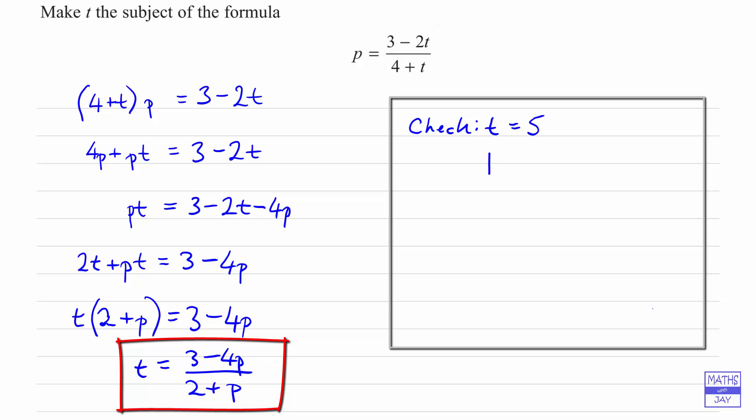So when t is equal to 5, then the original formula gave us 3 minus 2 times t in the numerator, so 3 minus 2 times 5, and that's divided by 4 plus t, so 4 plus 5.